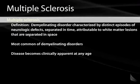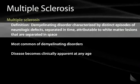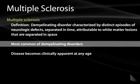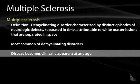Multiple Sclerosis is defined as a demyelinating disorder characterized by distinct episodes of neurologic defects separated in time, attributable to white matter lesions that are separated in space. It is the most common of all demyelinating disorders, and the disease can become apparent at any age, even childhood.